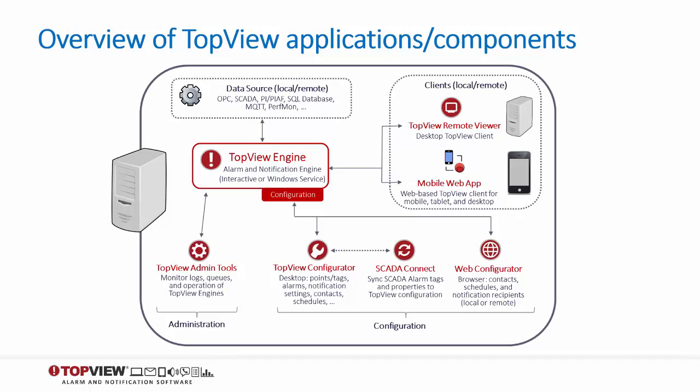There are two primary applications for configuration of the Top View engines. The Top View Configurator is the primary configuration tool. This desktop application allows the user to configure the tasks for each instance of the Top View engine, including the points or tags to monitor, alarm limits, and notification settings. The Web Configurator is a web-based version of the desktop configurator and can run local or remote to the Top View machine.